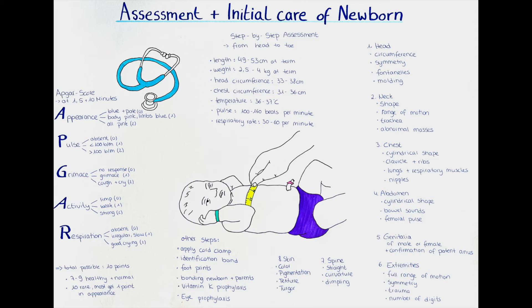We also measure head and chest circumference. The average head circumference is 33 to 38 centimeters, and chest circumference is a little less at around 31 to 36 centimeters.